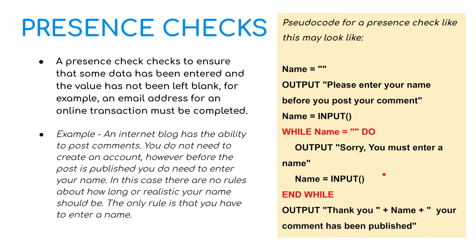A presence check is to ensure that some data has been entered and the value has not been left blank. For example, an email address for an online transaction must be completed. Here we have an example for an internet blog where a person needs to enter their name before posting a comment. Name is blank initially; output 'Please enter your name before you post your comment.' Name equals input. While the name is blank, output 'Sorry, you must enter your name.' Name equals input. As soon as a person enters their name — even a fake name like Mickey Mouse — it says 'Thank you, your comment has been published.'